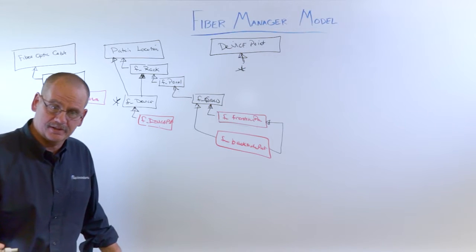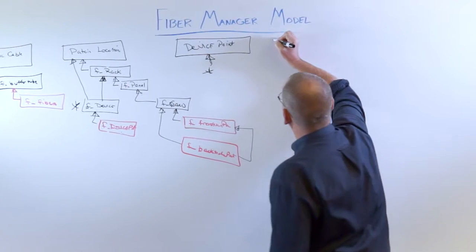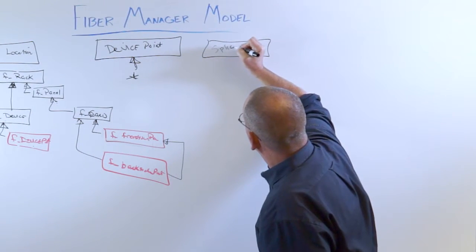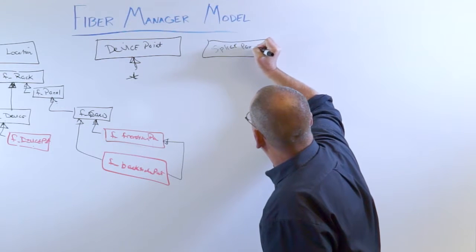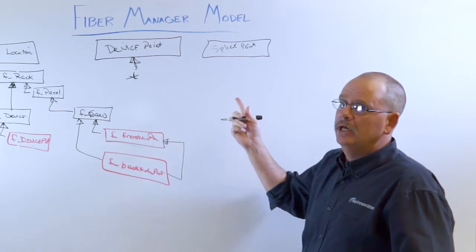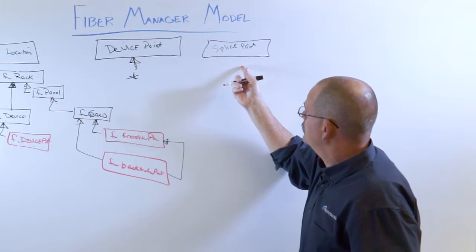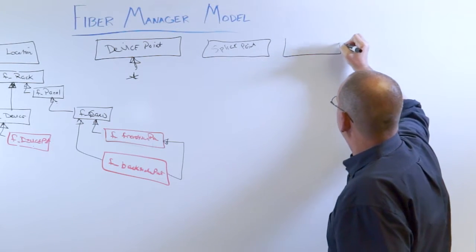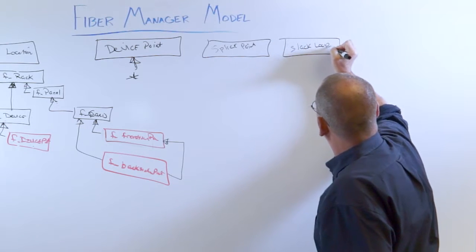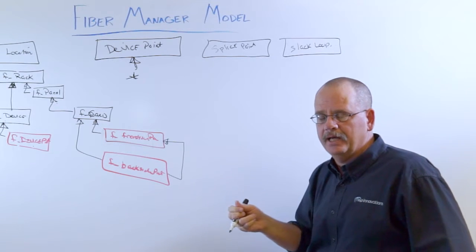Other feature classes that do not have the related objects are a splice point. Splice point, you want to give your splice cases where you're actually connecting two different fiber, two or more fiber optic cables. Other ones are slack loop. A slack loop where you're actually adding cable that's bound.